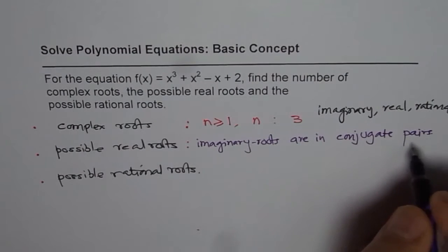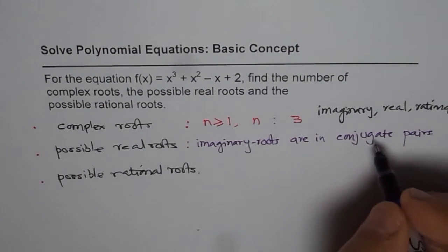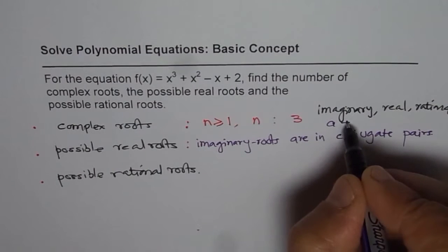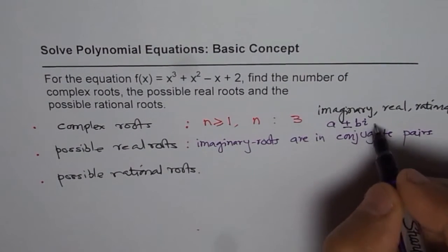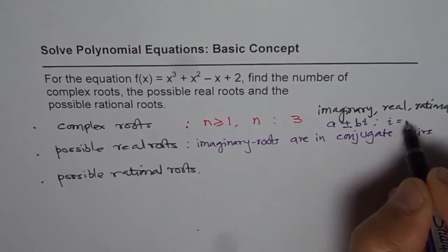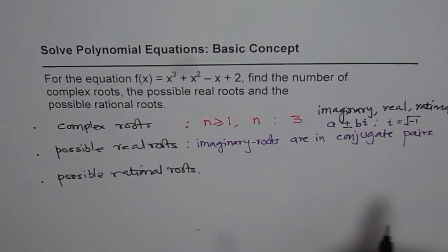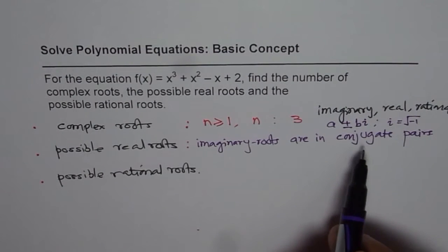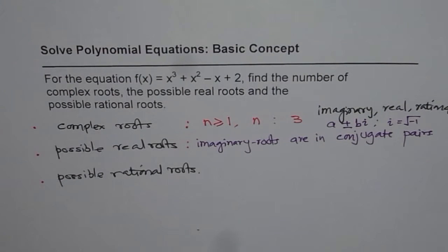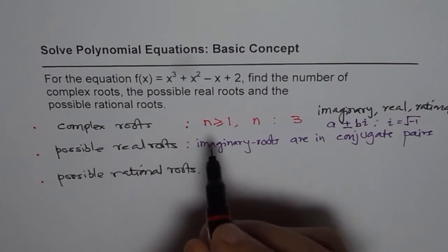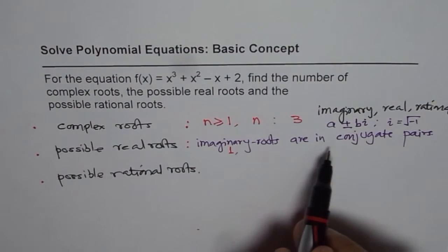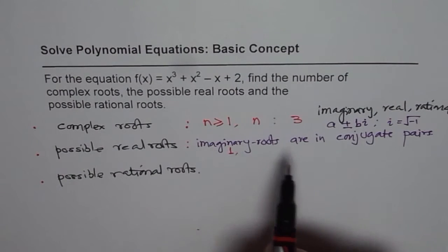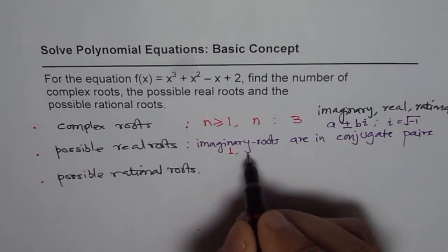Conjugate pairs means a plus minus bi, where i is that complex number which is equal to square root of minus 1. So imaginary roots are in conjugate pairs and therefore, possible real roots should be how many? The possible real roots are 1 that will lead to 2 complex conjugate roots, imaginary I should say, or 3.